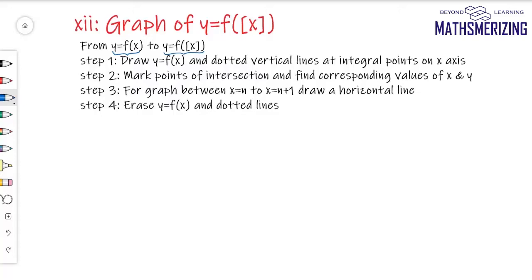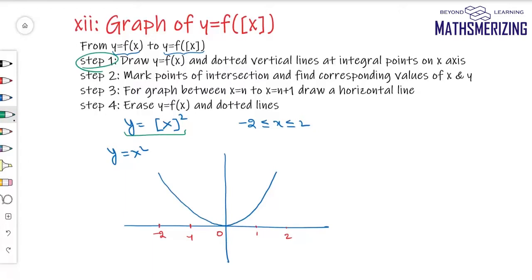For example, suppose I have to draw the graph of y = (⌊x⌋)² between x = -2 and x = +2. My basic graph will be y = x², so I'll draw that graph first. In order to draw y = (⌊x⌋)², the first step is to draw the graph of f(x) and then draw vertical lines at integral points on the x-axis.